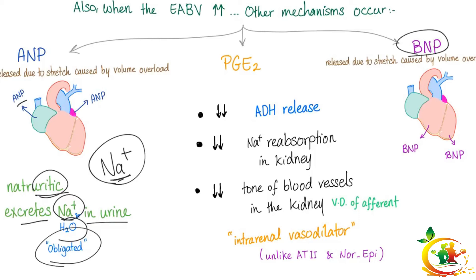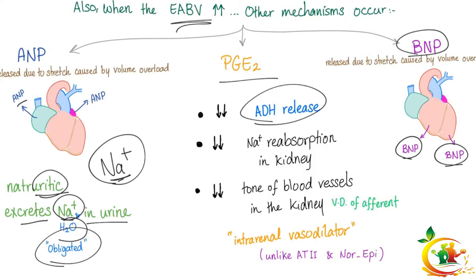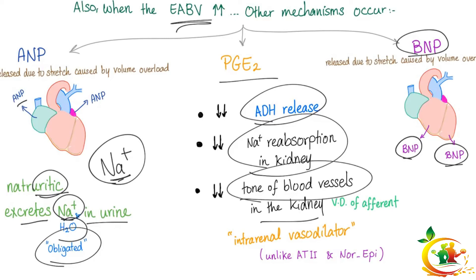Brain natriuretic peptide (BNP) does the same thing but is released from the ventricles, not the atria. Prostaglandin-A2 decreases ADH release — you don't want ADH when effective arterial blood volume is high. It also decreases sodium reabsorption in the kidney and decreases the tone of blood vessels in the kidney, specifically the afferent arteriole, causing vasodilation — in contrast to angiotensin-2 and norepinephrine, which cause vasoconstriction.